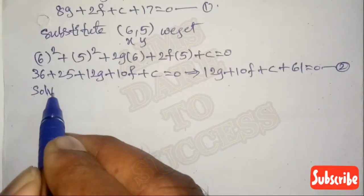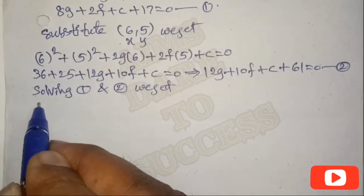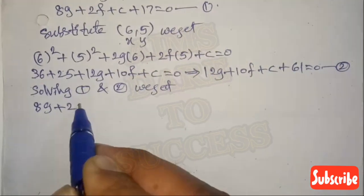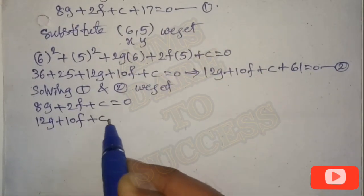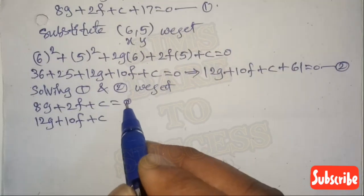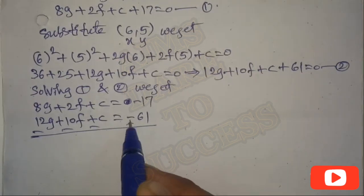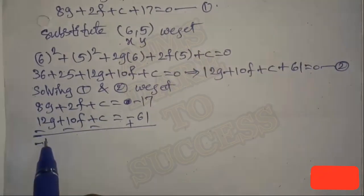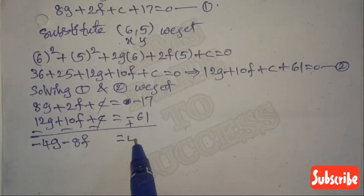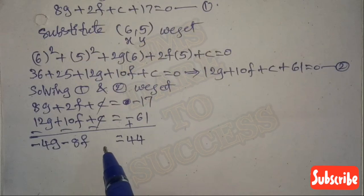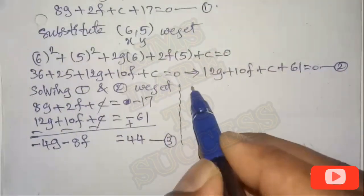Solving Equations 1 and 2 to remove the c value: Equation 1 gives 8g + 2f + c = -17 and Equation 2 gives 12g + 10f + c = -61. Subtracting, 8g - 12g = -4g, 2f - 10f = -8f, and c cancels. So -4g - 8f = 44 - (-17) ... giving -4g - 8f = 44. Let this be Equation 3.